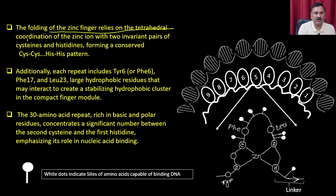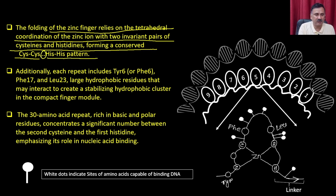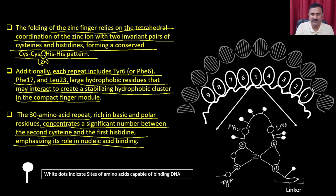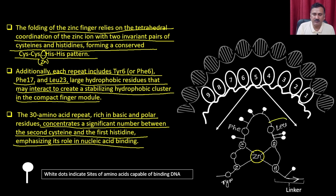Folding of the zinc finger relies on tetrahedral coordination of the zinc ion with two invariant pairs of cysteine and histidine, forming a conserved Cys-Cys-His-His pattern, with zinc in the centre. Each repeat also includes tyrosine or phenylalanine at position 17 and leucine at position 23 — large hydrophobic residues that create a stabilizing hydrophobic cluster. The 30 amino acid repeat, rich in basic and polar residues, is concentrated between the second cysteine and first histidine, emphasizing its role in nucleic acid binding.